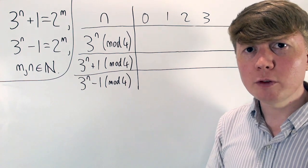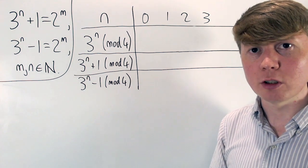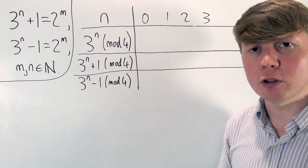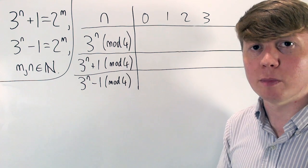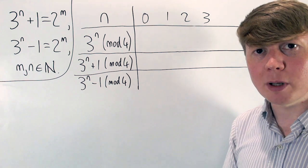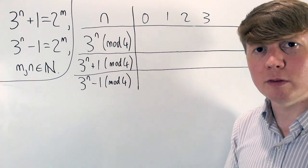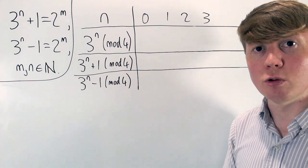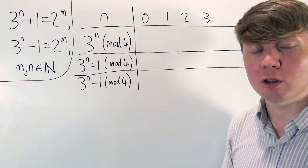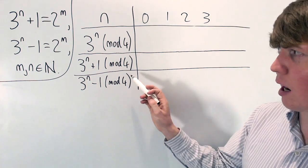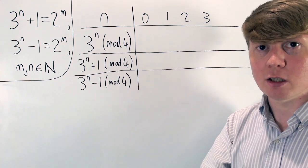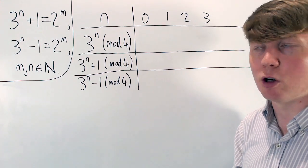If we consider all powers of 2 modulo 4 — what's their remainder when you divide by 4 — all powers of 2 are multiples of 4 except for 1 and 2, so everything from 4 and above is equivalent to 0 modulo 4. If you look at powers of 2 modulo 8, all of them are equivalent to 0 modulo 8 except for 1, 2, and 4. So other than a few special cases, 2 to the m has to be equivalent to 0 modulo 4.